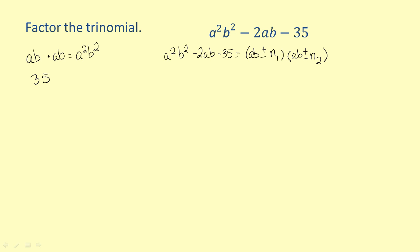Try the values 1 and 35 as factors. There is no way these values could make a sum of 2. Try the values 5 and 7 as factors. The product of 5 and negative 7 is negative 35, and the sum of 5 and negative 7 is negative 2.